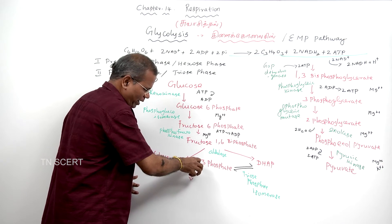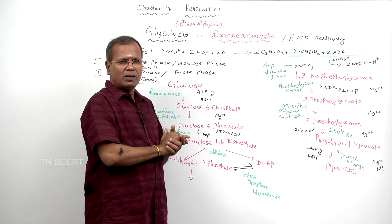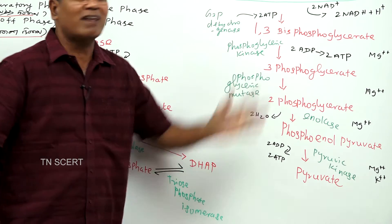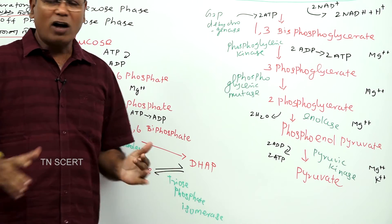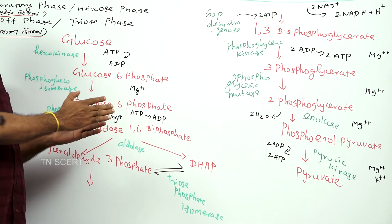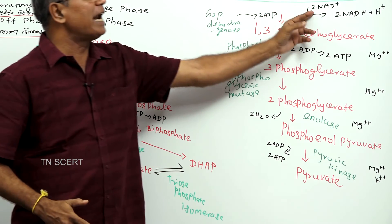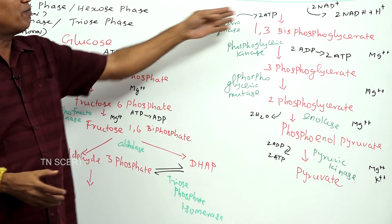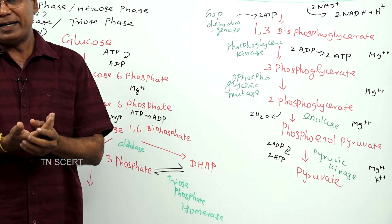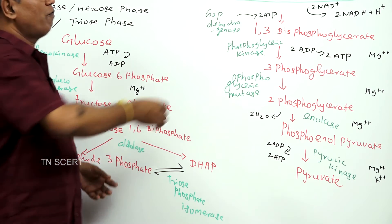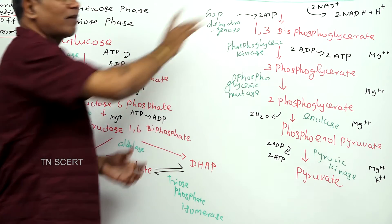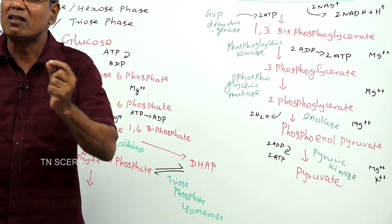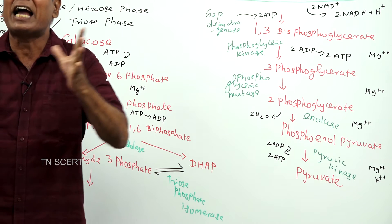Glyceraldehyde 3-phosphate is oxidized and phosphorylated to form 1,3-bisphosphoglycerate. During oxidation, hydrogen is removed and NAD becomes NADH2. The enzyme that helps this reaction is glyceraldehyde 3-phosphate dehydrogenase.